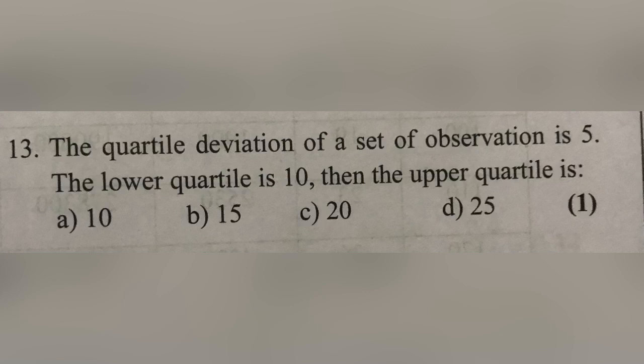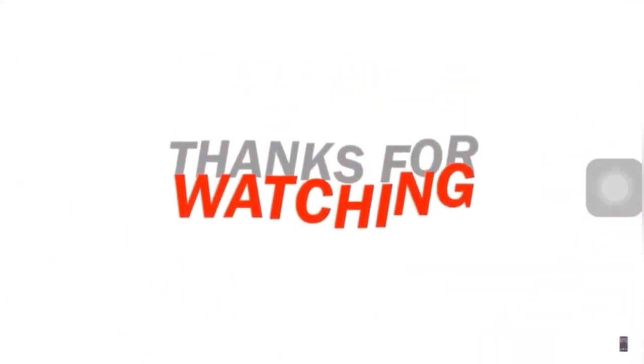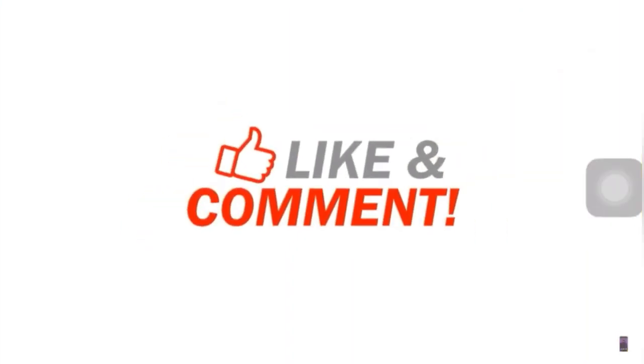The quartile deviation of a set of observations is 5. Q3 minus Q1 divided by 2 equals 5. The lower quartile Q1 is 10, so Q3 minus Q1 equals 10, giving us the upper quartile Q3 equal to 20.